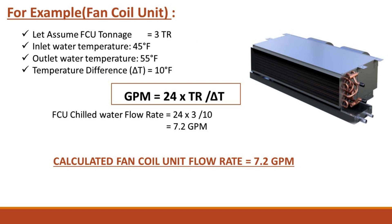For example, consider a fan coil unit. Assume the FCU tonnage is 3 TR, with an inlet water temperature of 45°F and an outlet water temperature of 55°F, giving a temperature difference ΔT of 10°F. Applying the formula: GPM = 24 × TR / ΔT = 24 × 3 / 10. The calculated fan coil unit chilled water flow rate is 7.2 GPM.